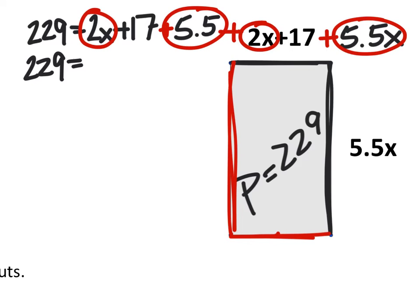So that would be 15x's if we add them all together. We've got these 17 and then these 17 as well. So we're just going to add 34.